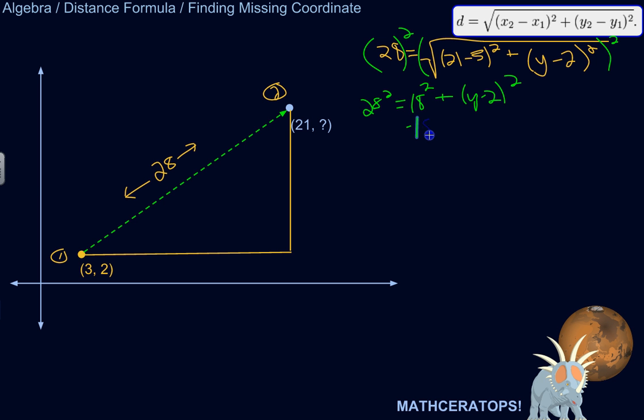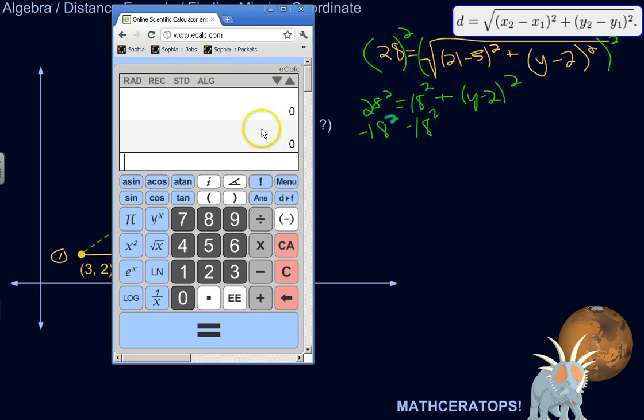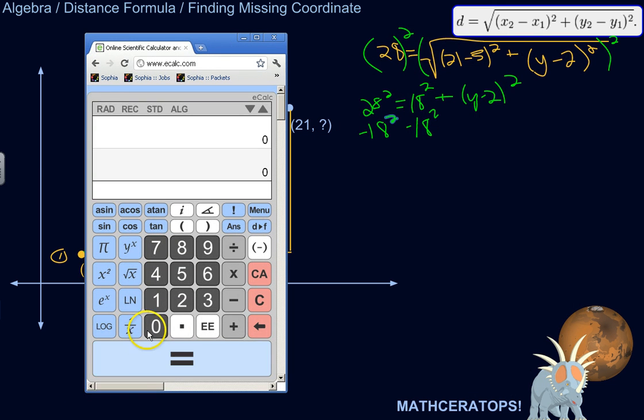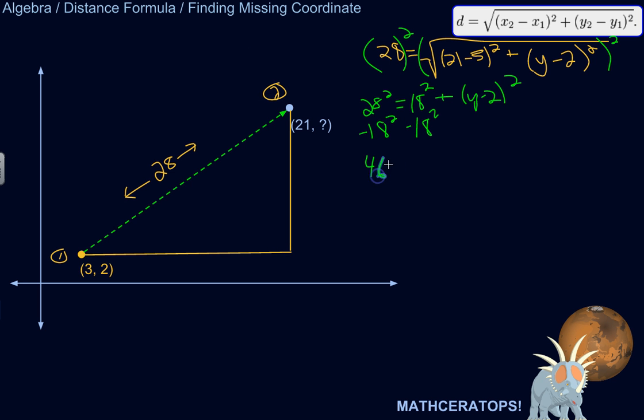Now I can subtract 18 squared from both sides of the equation. So here's where I'm going to grab the calculator and just do all that at once. So 28 squared minus 18 squared. So 28 squared minus 18 squared is equal to 460. So 460. So that's what I'm left with on this side of the equation. On this side of the equation, I have y minus 2 squared.